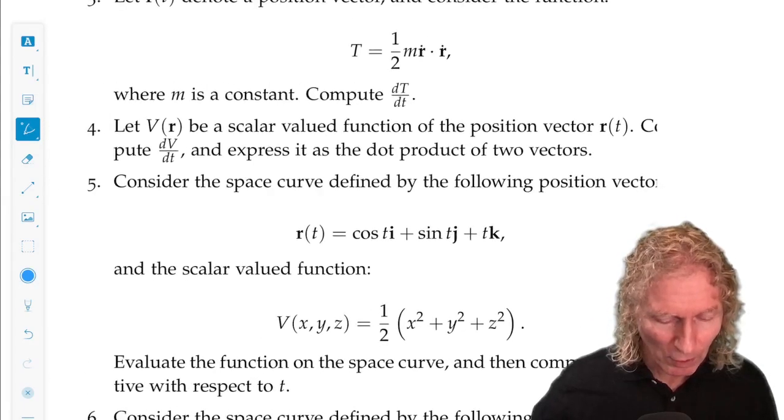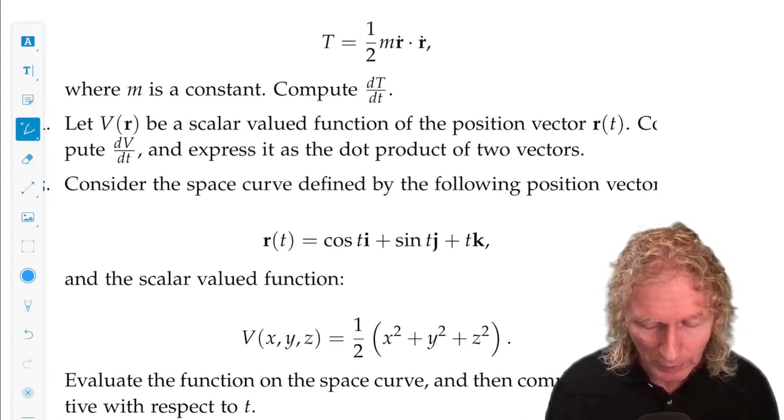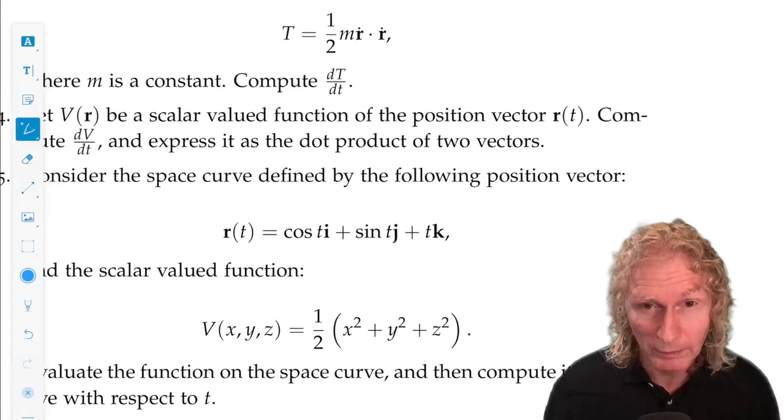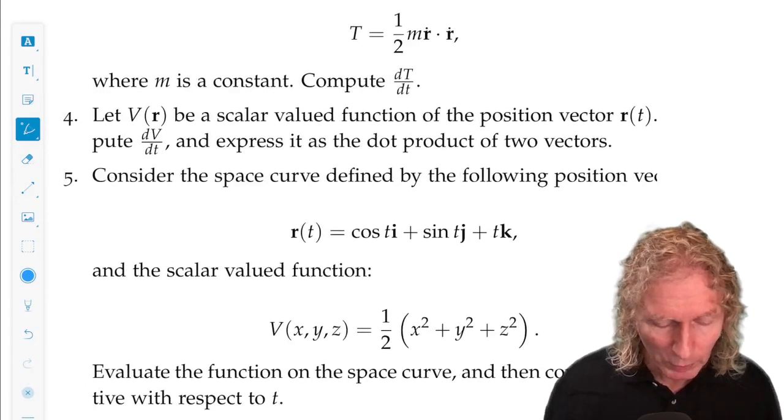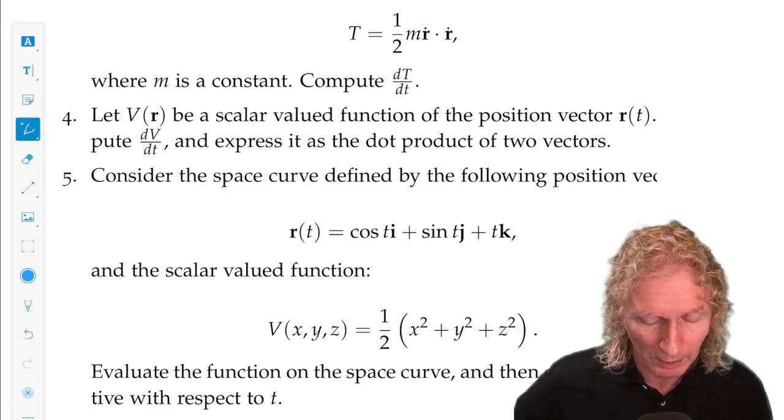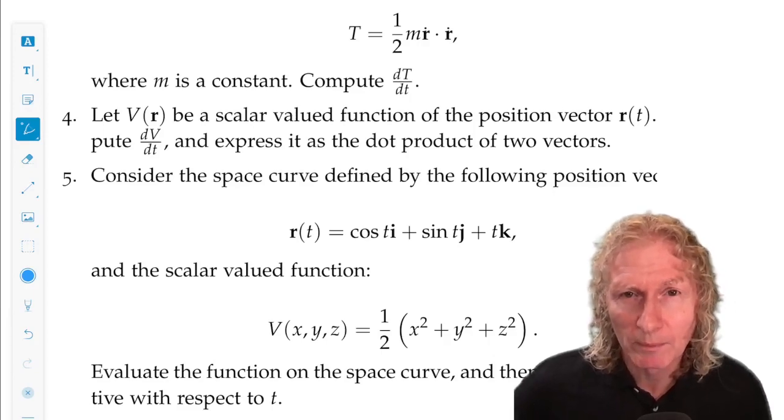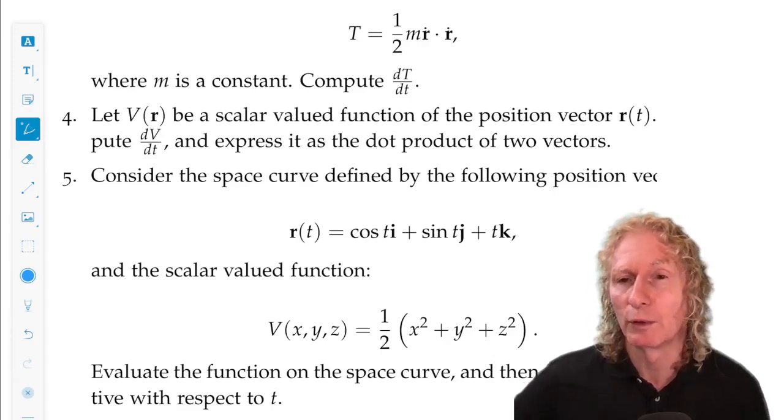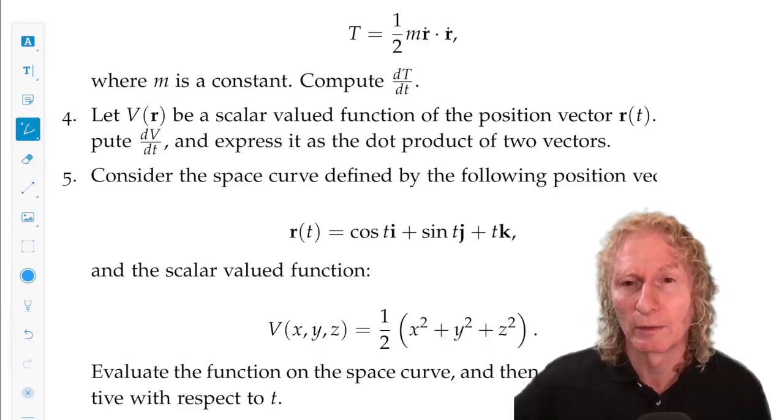Let V of r be a scalar valued function of the position vector r of t. I want you to compute dv dt. Kind of a chain rule going on here. And express it as the dot product of two vectors.